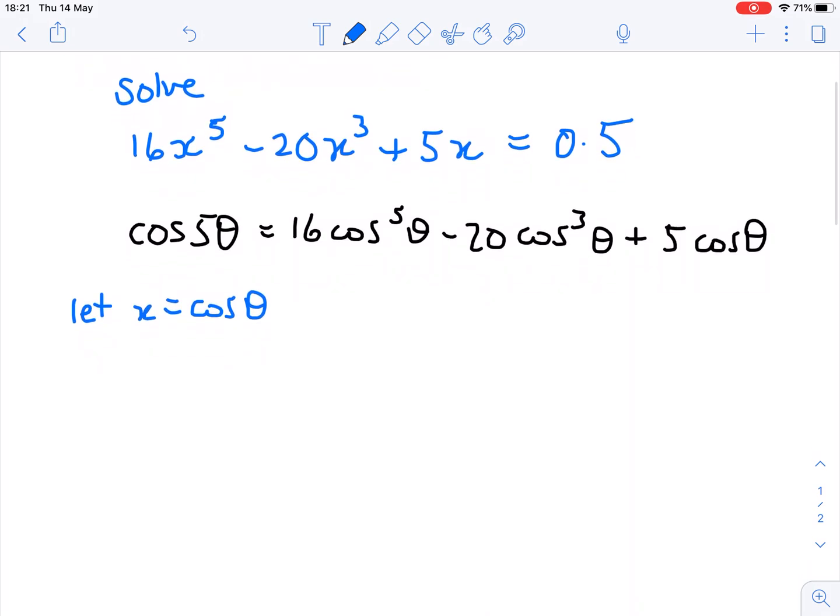So we've got x = cos(θ). Now in the original equation, if I substitute in cos(θ) everywhere it says x, then my equation becomes 16cos^5(θ) - 20cos^3(θ) + 5cos(θ) = 0.5.